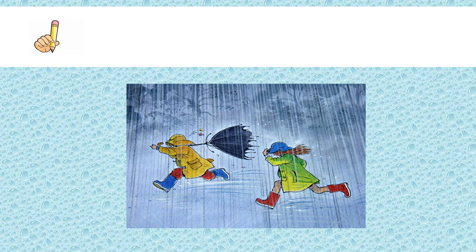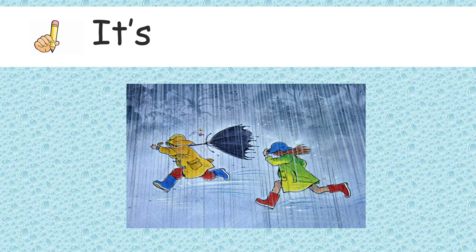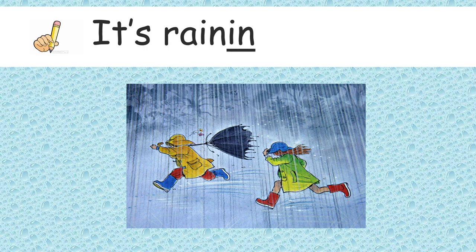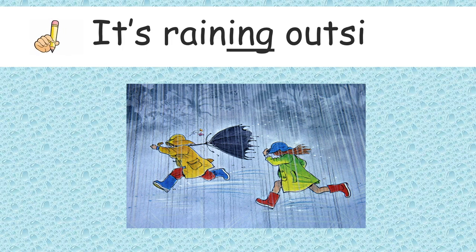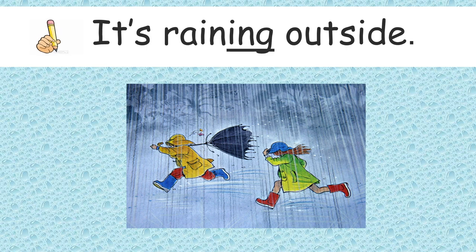Now let's try to write that sentence using the new ways I just showed you. It's — I-T apostrophe S. Raining — we're going to use the I-N-G. It's raining outside, period. It's raining outside — that means it's happening right now. I see the boys and the girls running in the rain right now.